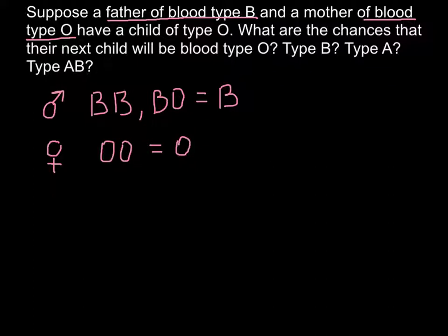Now in order to solve our problem, we need to build a Punnett square. On this side would be the male, so we know that his genotype is only one possible, that is BO.